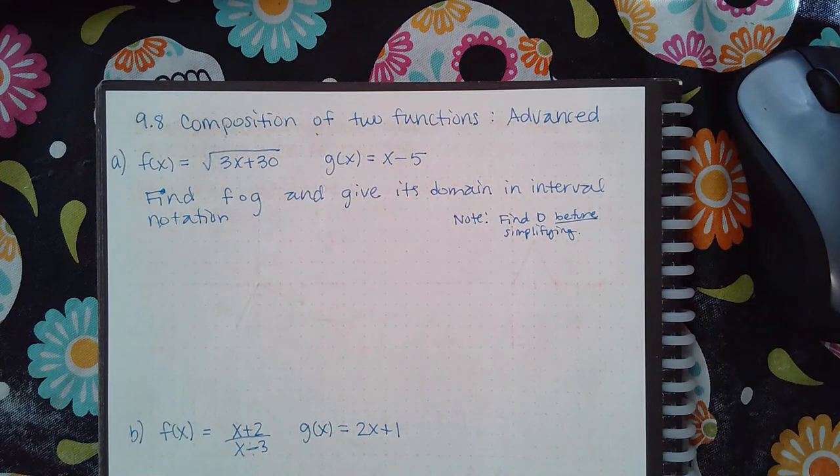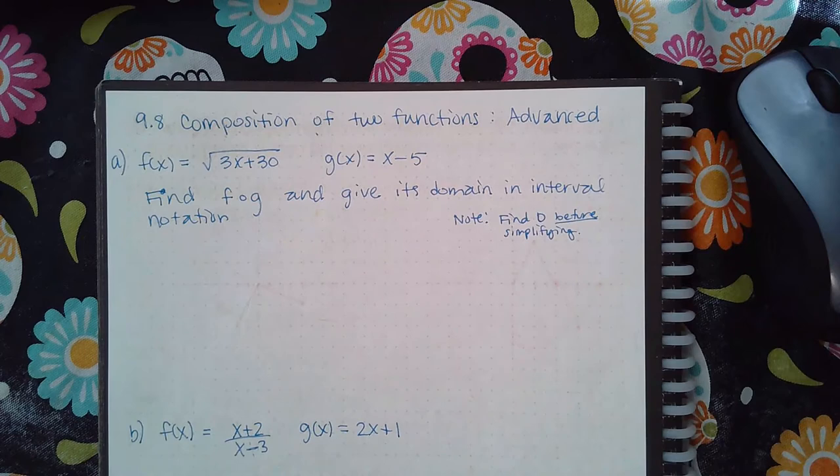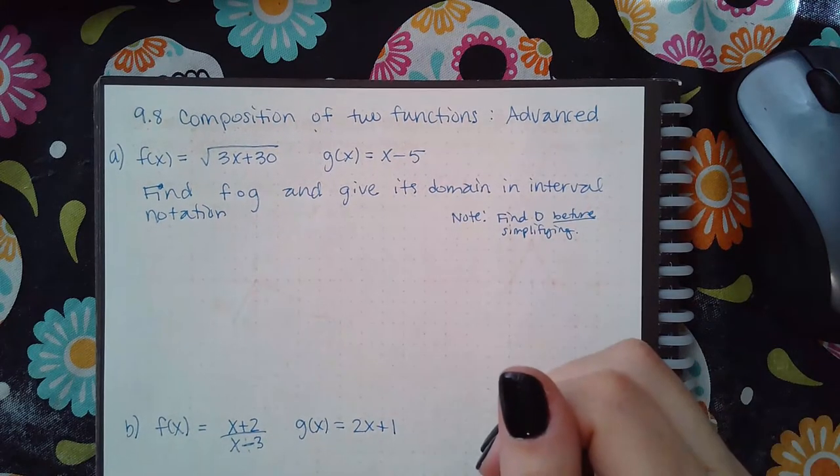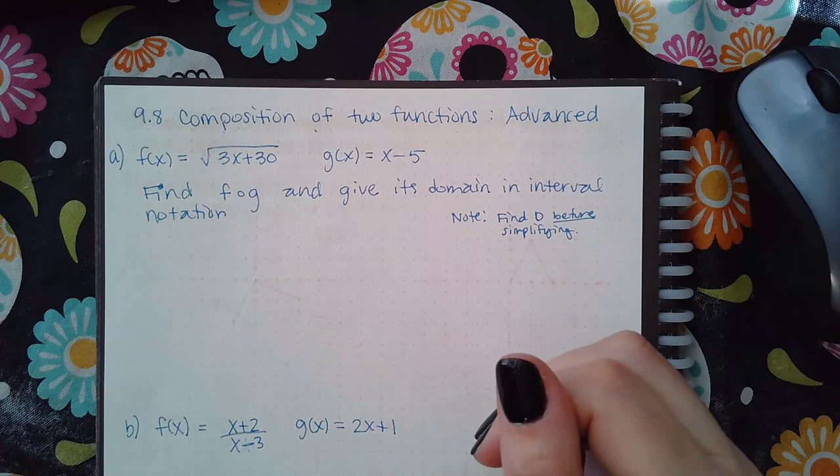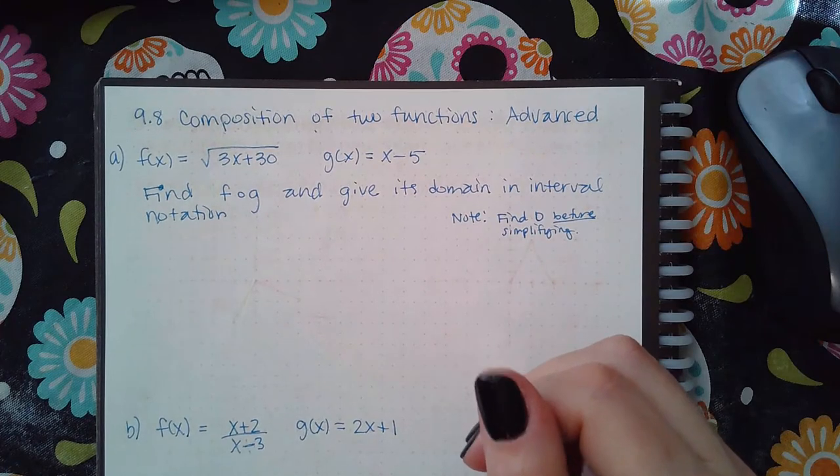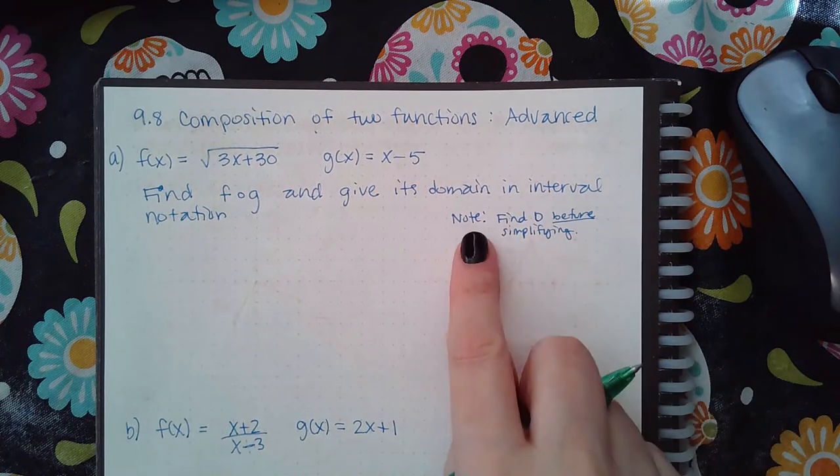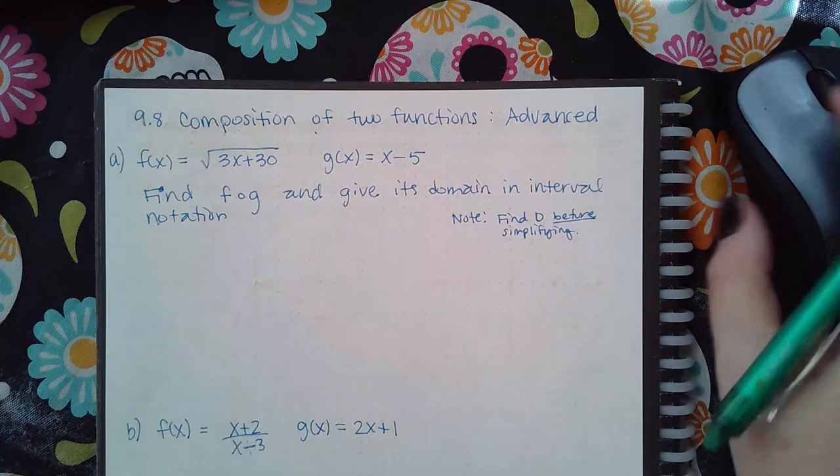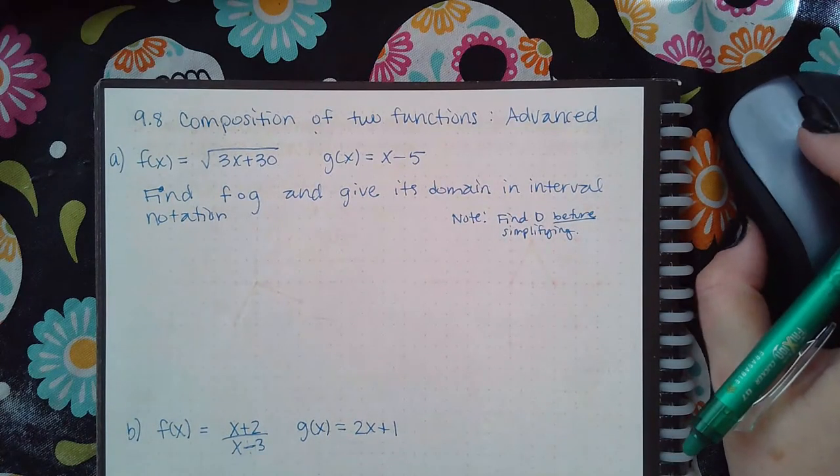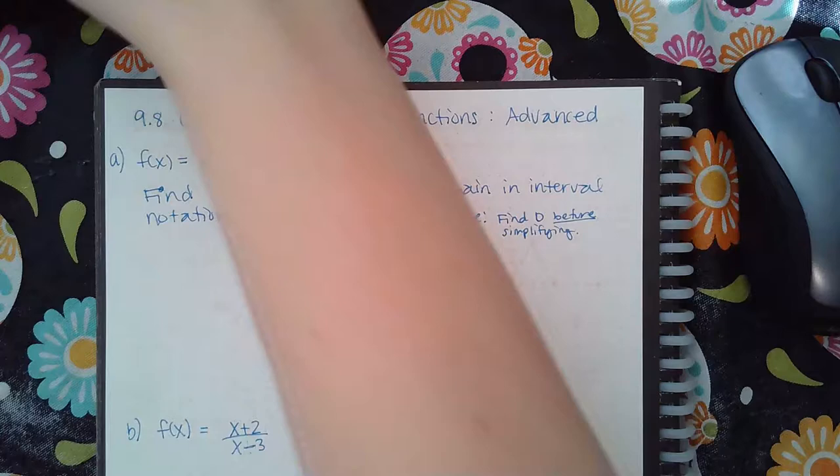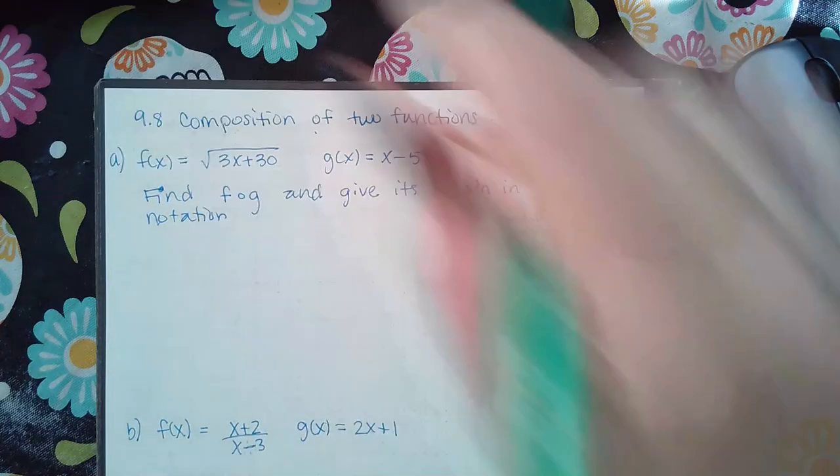Okay, in this topic it is 9.8 composition of two functions advanced. The goal is to find f of g and then give its domain in interval notation. I have a note here that says find the domain before simplifying. So for this first topic what we're going to do is we're going to first find f of g and then discuss what the domain is going to look like after that.